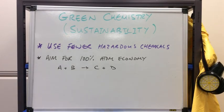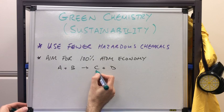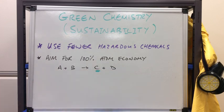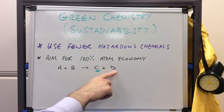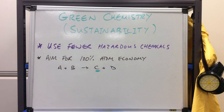The second method is to develop processes which would ultimately have 100% atom economy. If we look at the reaction A + B → C + D, and suppose that substance C is our useful product, you can see this reaction also produces substance D, which is a waste product. Waste products can't just be disposed of any old how — you've got to treat them.